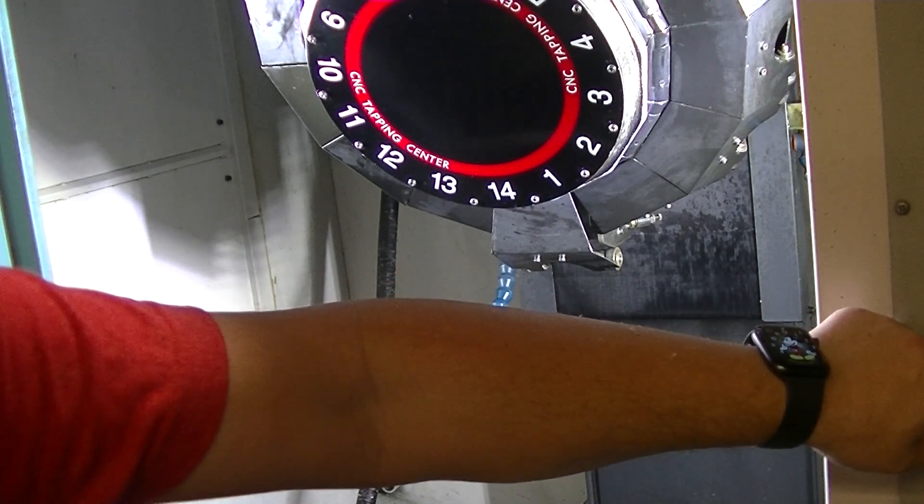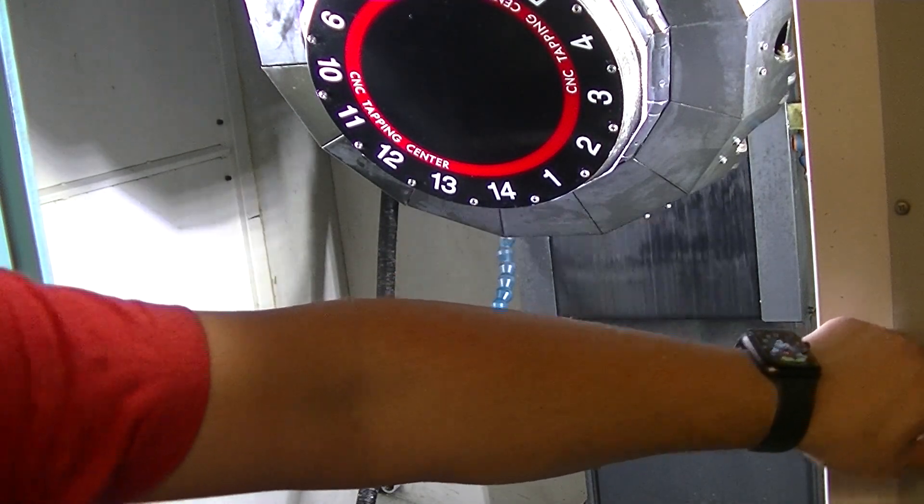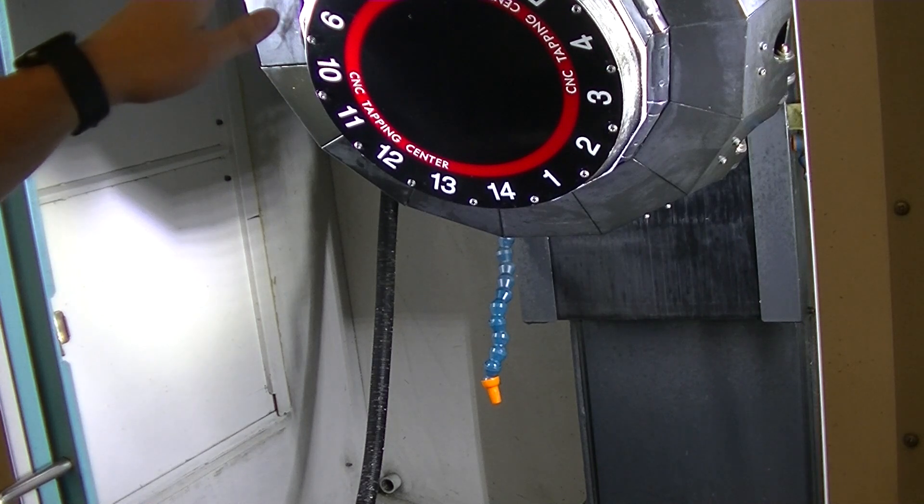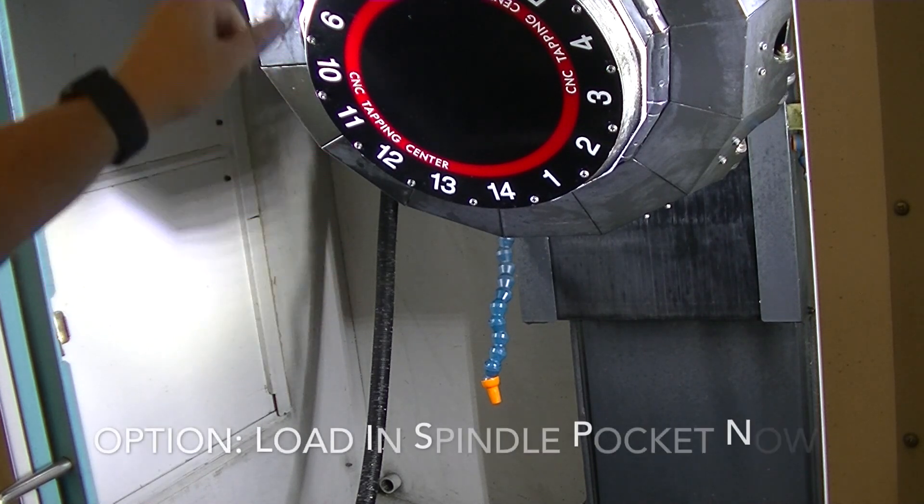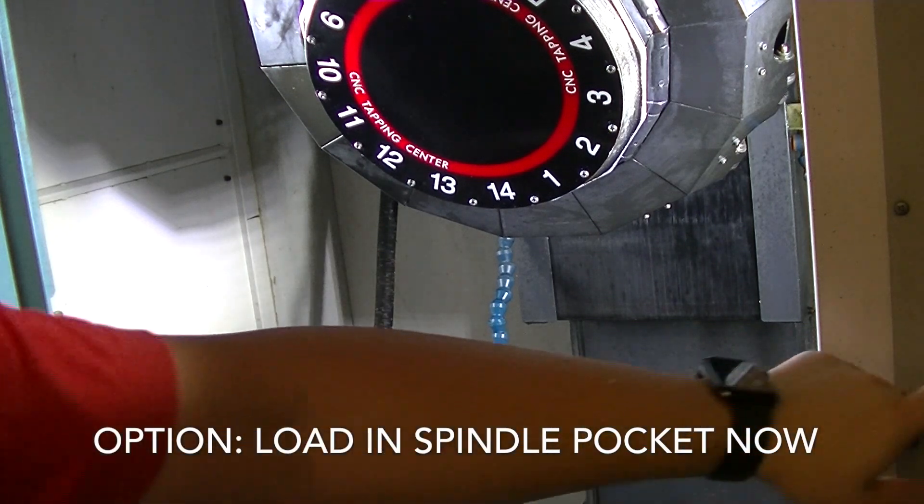So the first thing I'm going to do is press the ATC button, press it again, it retracts. I don't have the air on right now so you can actually hear me, but normally there's an air purge that's happening.